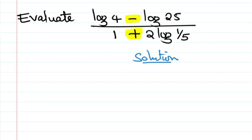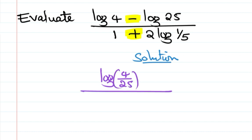So let's do this. Let's divide. Log of 4 divided by 25 — that's the numerator part. Then divide by the denominator.